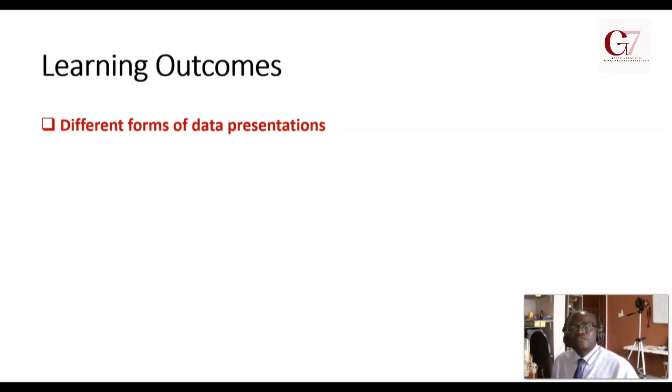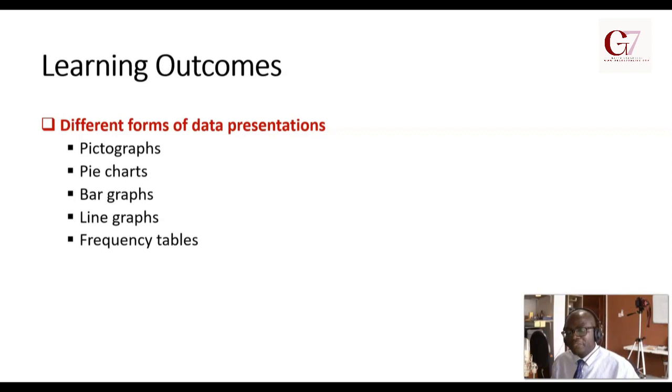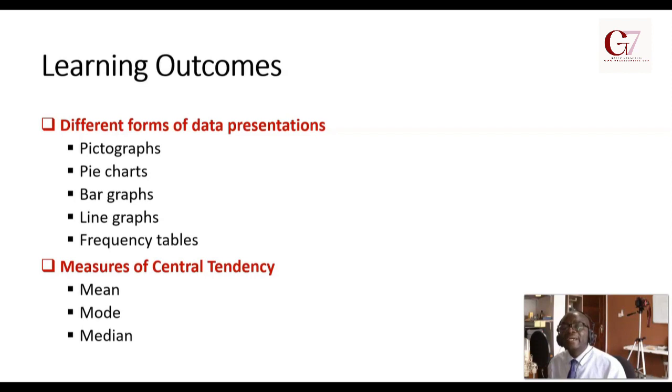We are going to learn the different forms in which data can be presented. Because if we're going to do counting, the numbers we get, we may choose to represent them in a certain way. The different forms of data presentations include pictographs, pie charts, bar graphs, line graphs, and frequency tables. After looking at data presentations, we're going to look at measures of central tendency: the mean, the mode, and the median.